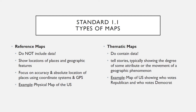Let's start with types of maps, standard 1.1. I think this is the biggest confusion I am seeing from you guys. There are many different types of maps, but let's back way up — there are two main categories. All maps are either going to be a reference map or a thematic map, and all other maps fall into one of those two.